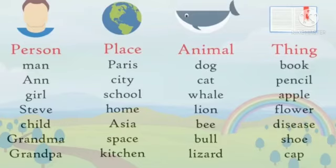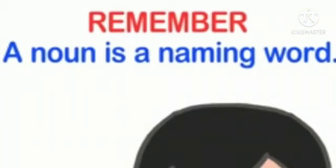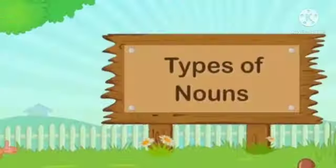Things include: book, pencil, apple, flower, disease, shoe, cap. These are called things. Students, always remember that a noun is a naming word.